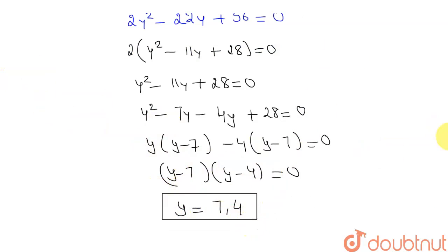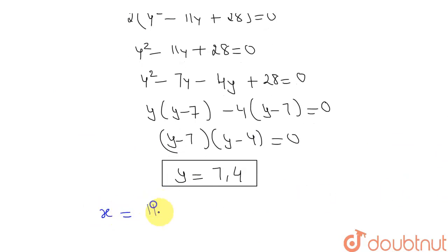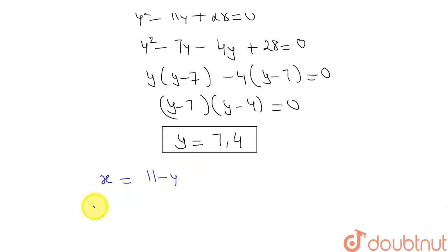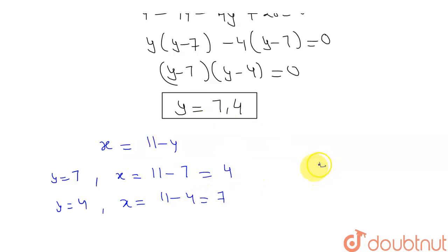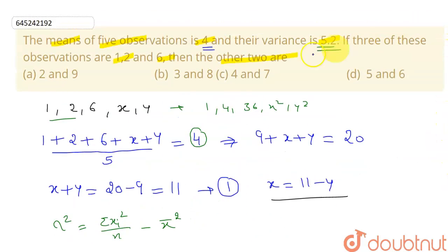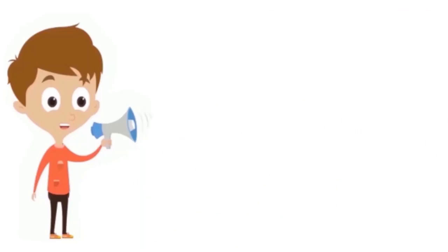Since x equals eleven minus y: if y equals 7, then x equals eleven minus seven, which is four. If y equals four, then x equals eleven minus four, which is seven. So the two observations are 4 and 7. Matching with the options, option C is correct. The two observations are 4 and 7.